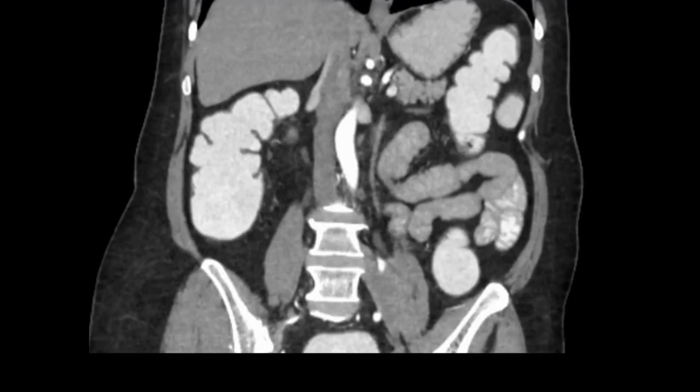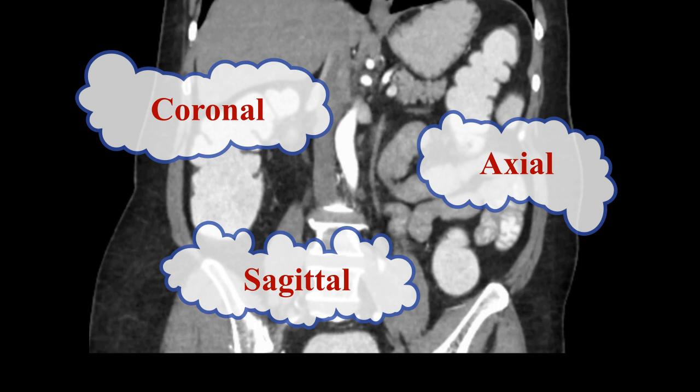First let us see the different planes in which you can see the abdomen on a CT scan. The abdomen can be divided in a CT scan in three different planes. Of course you can reformat and reconstruct the images into any plane, but for the films or the console images that you get, the basic planes are three: coronal, axial, and sagittal.